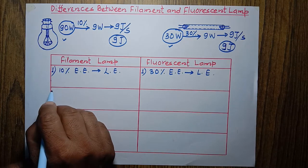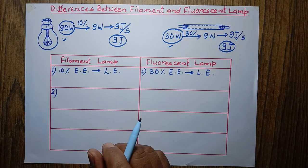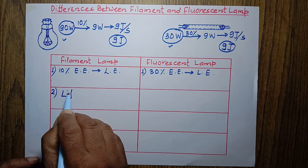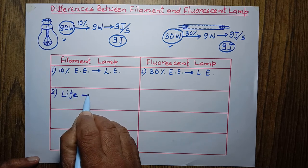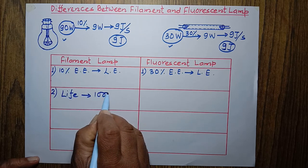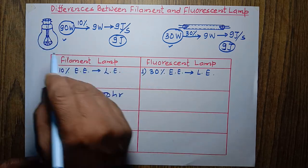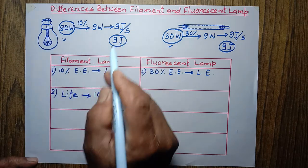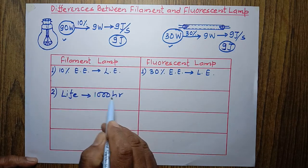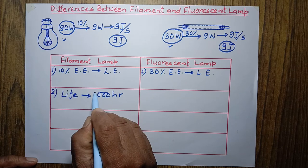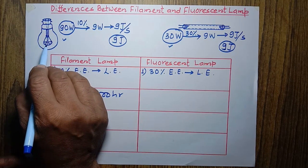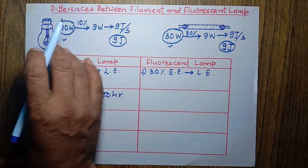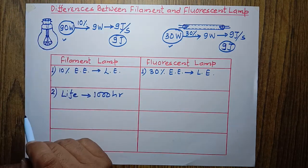Now the second difference. The life of the filament lamp is about 1000 hours. This means when we use it at home or in any place, it will work for 1000 hours of lighting time. After 1000 hours, the filament will break and the lamp will be damaged. It is designed in such a way that it can last up to 1000 hours.